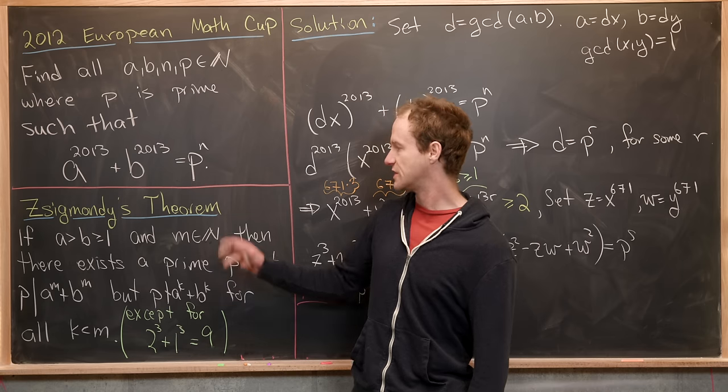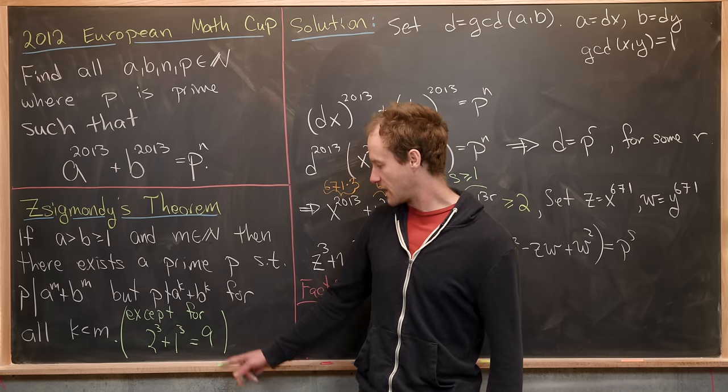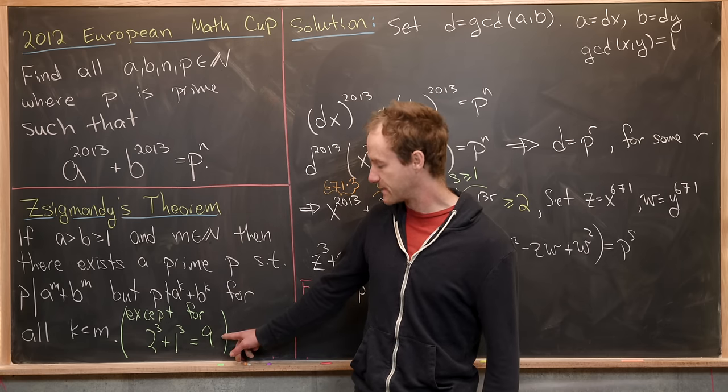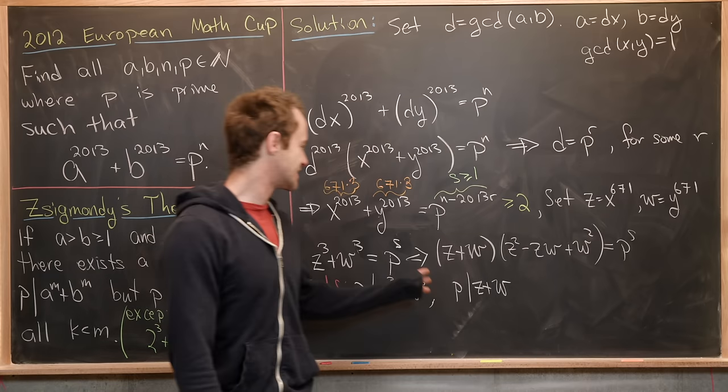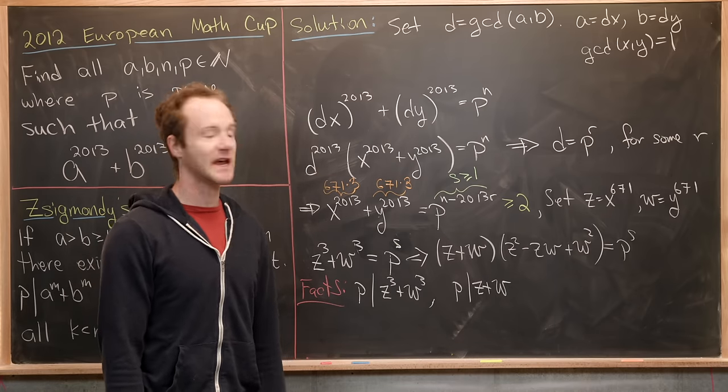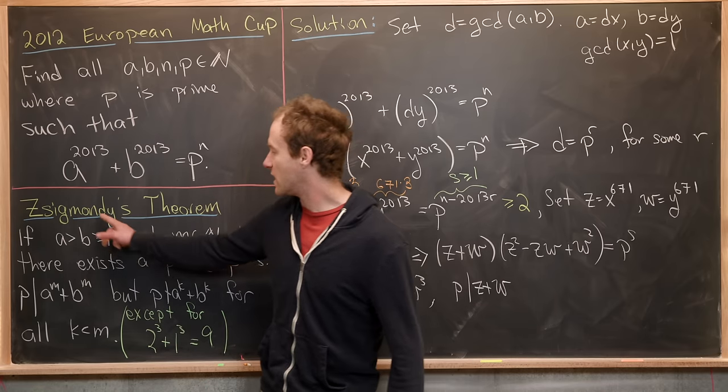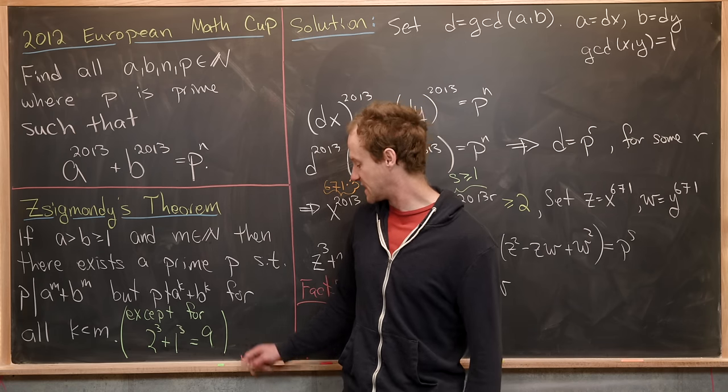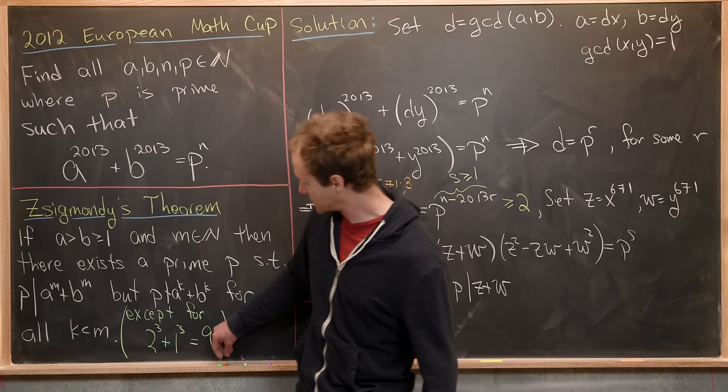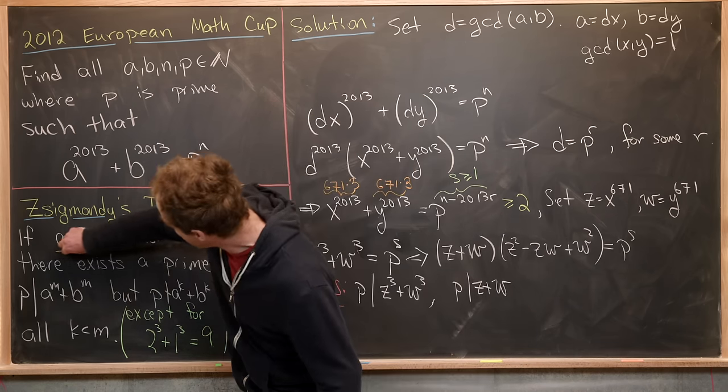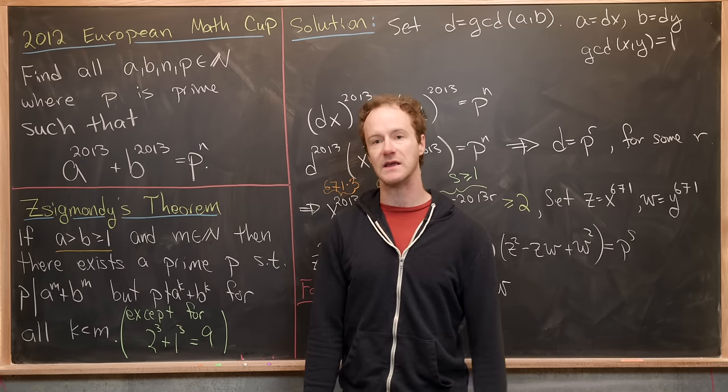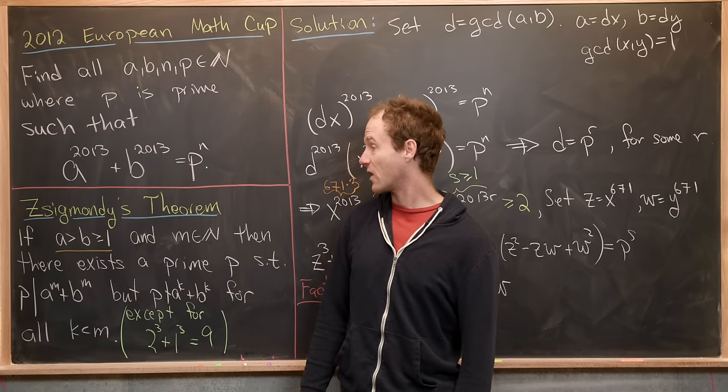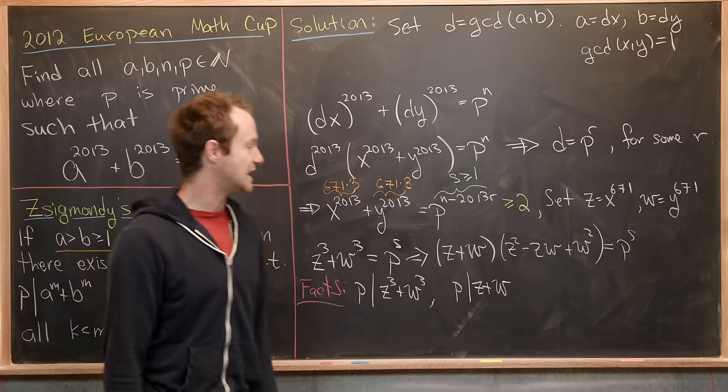So it looks like we've contradicted this theorem over here. So that means we're either in our exception, which it's pretty easy to check that we're not in our exception case, or we have the hypotheses not satisfied. And the hypothesis that could not be satisfied would be this one right here, where a is strictly bigger than b. So that tells us that for us, a must be equal to b.